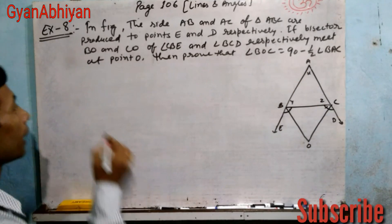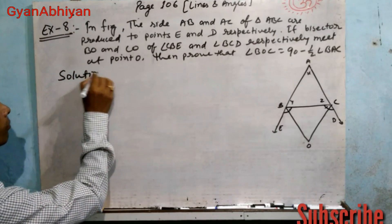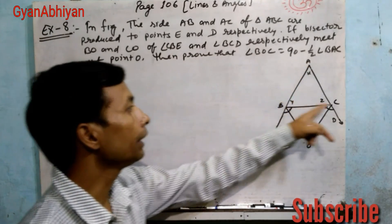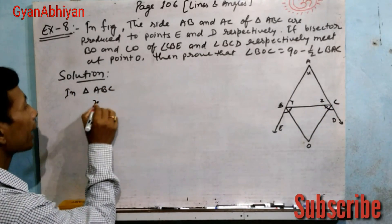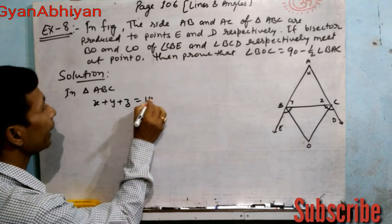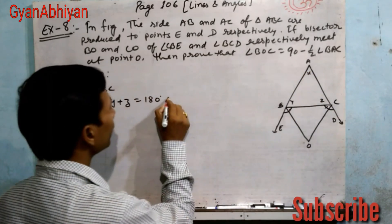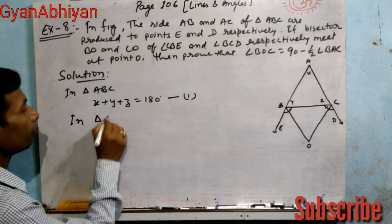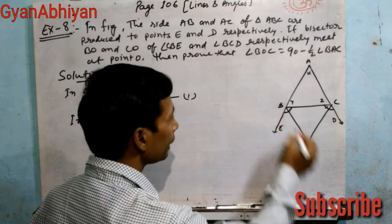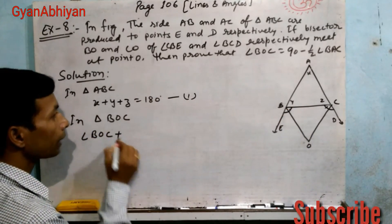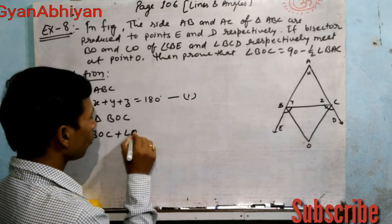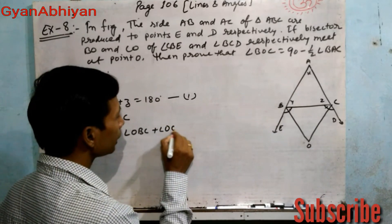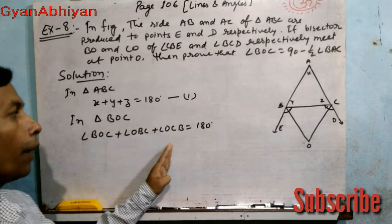हमें यह prove करना है। Triangle ABC दिया हुआ है, AB और AC को E और D तक produce कर दिया गया है। BO इस angle का bisector है और CO इस angle का bisector है, दोनों O पर मिलते हैं। Solution में, in triangle ABC: x plus y plus z equal to 180 degree — इसको equation 1 मानते हैं। अब triangle BOC में देखते हैं: angle BOC plus angle OBC plus angle OCB equal to 180 degree.